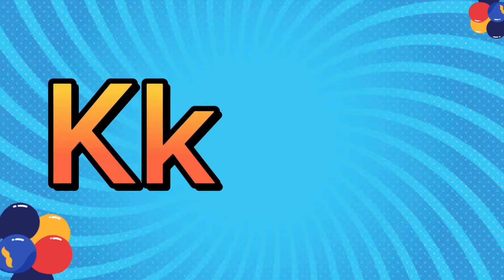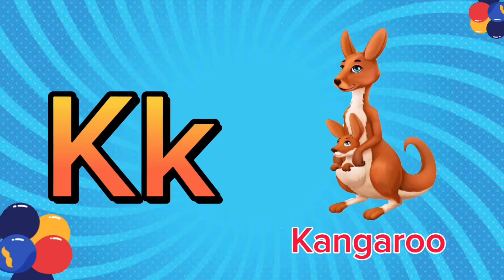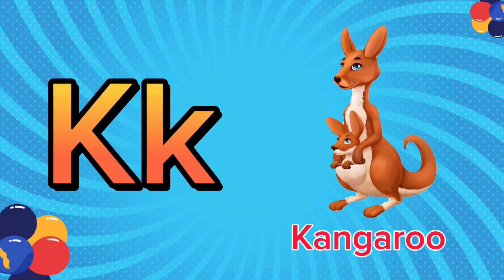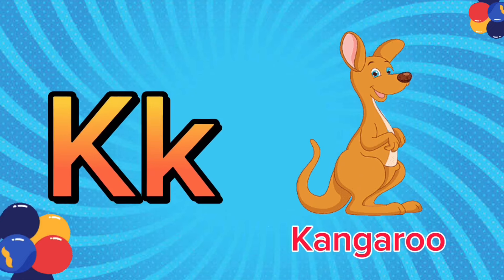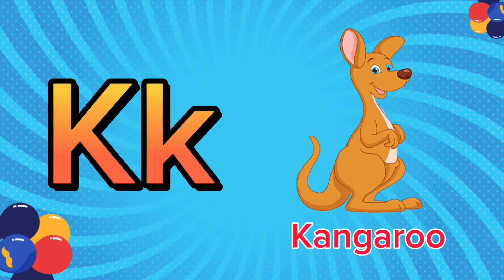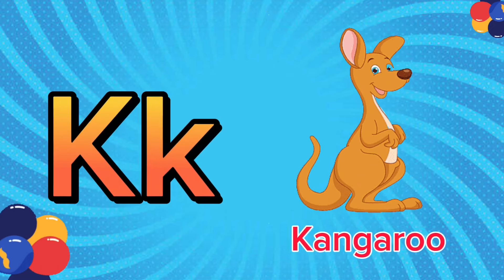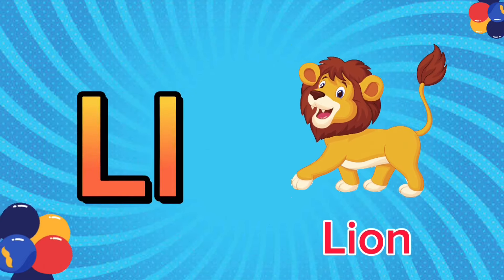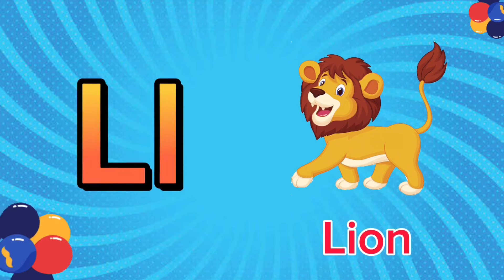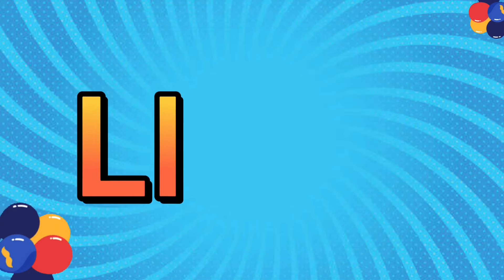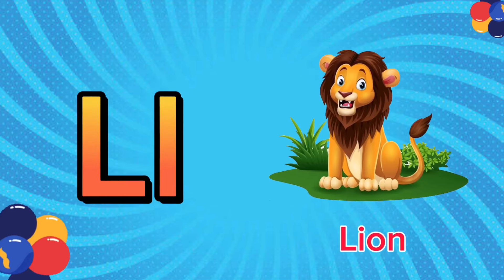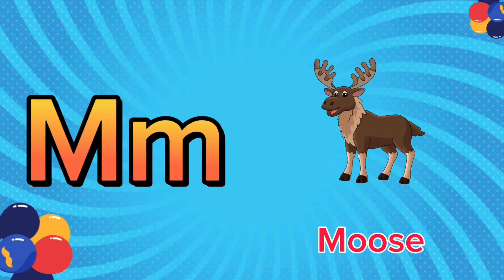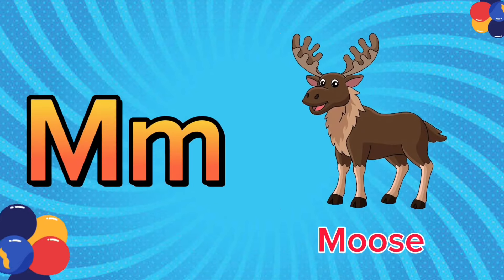K is for kangaroo. K, K. Kangaroo. K is for kangaroo. K, K. L is for lion. L, L. Lion. L is for lion. L, L.